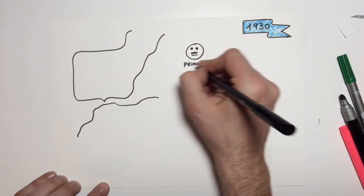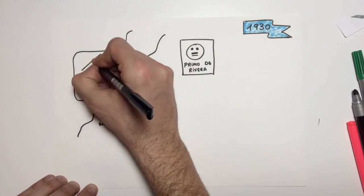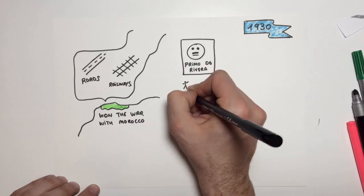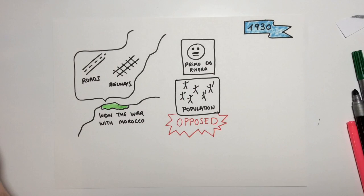Primo de Rivera won the war with Morocco, and many roads, railways and other public works were built under his rule. But the population opposed his dictatorship and demanded more freedom.